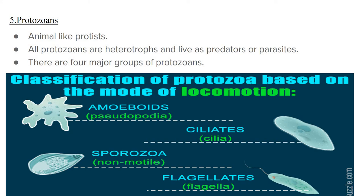The first group is amoeboids — protozoans which have pseudopodia as their locomotory organ, a feature of amoeba. The second category is ciliates — they possess cilia, small hair-like projections all over the body, like paramecium. The third is sporozoa — non-motile protozoans which do not have any flagella, cilia, or pseudopodia. The fourth group is flagellates — protozoan flagellates having flagella for locomotion.